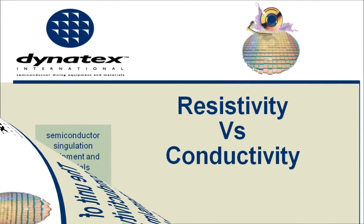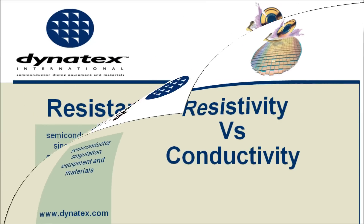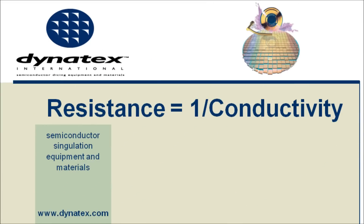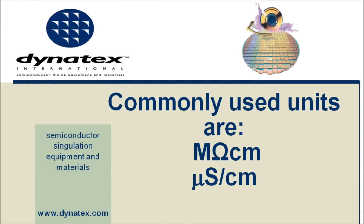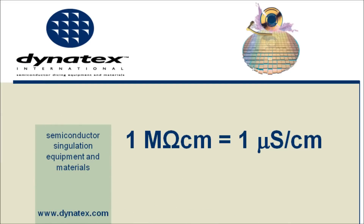So how does resistivity relate to conductivity? Resistivity is equal to the inverse of conductivity, and of course conductivity is equal to the inverse of resistivity. Here are some equivalent values: one ohm meter is equal to one Siemens per meter; one kilo ohm meter is equal to one millisiemens per meter; and one mega ohm meter is equal to one microsiemens per meter. More commonly used units are mega ohm centimeter and microsiemens per centimeter. One mega ohm centimeter is equal to one microsiemens per centimeter.